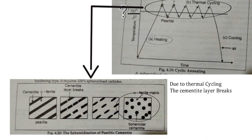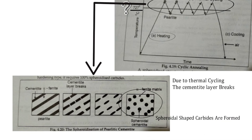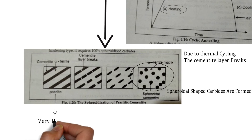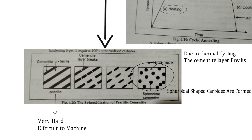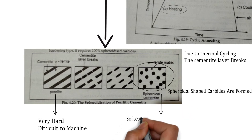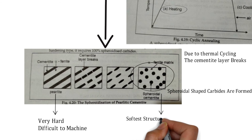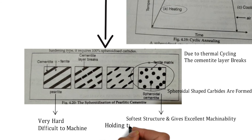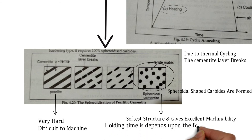Due to the breaking of the cementite layer, there is formation of spheroidal cementite — spheroidal-shaped carbides are formed. In pearlite, which is very hard and difficult to machine, after repeated heating and cooling cycles we obtain spheroidal cementite, which is soft in nature and gives excellent machinability.